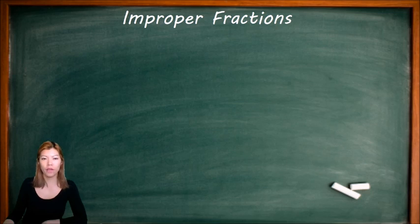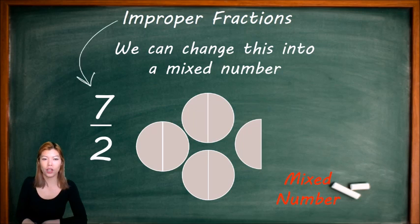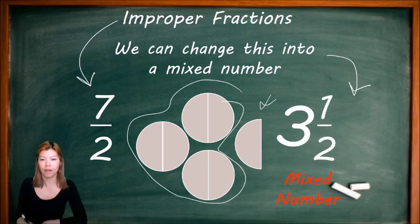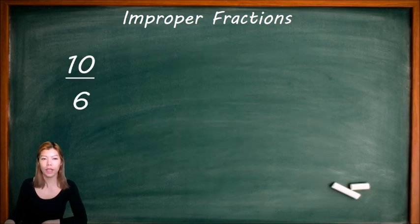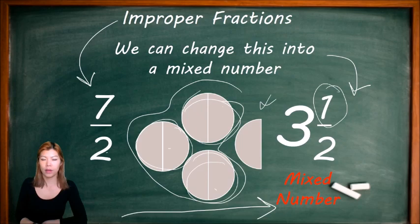Let's look at improper fractions. 7 over 2 is when we have 7 little pieces that are halves, and we can change this into a mixed number. This is an improper fraction where the top number is bigger. We can see here that there are 3 and a half, so we write 3 and a half. To go from improper to mixed number, we count how many wholes we have: 7 divided by 2 gives us 3 with a remainder of 1. So we get 3 whole, and 1 piece remaining out of 2.